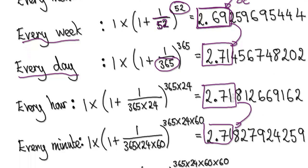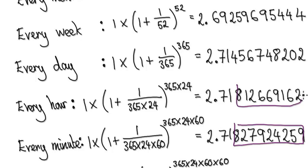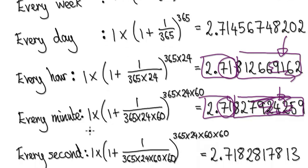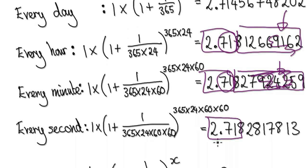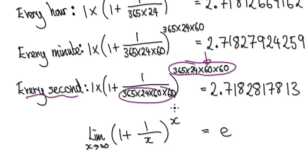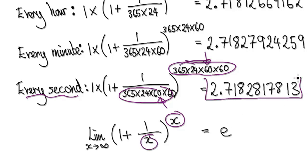From every hour onward, rounding to two decimal places you'd get $2.72 whether it's every hour or every minute. Theoretically you're getting more money, but in real life with two decimal places we don't notice the difference. If you compound it every second, this is how much you earn. Notice that this value is getting bigger and bigger as you compound more and more, but it's approaching a limit — and that limit is the number e.